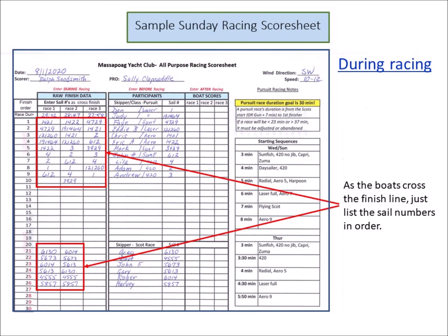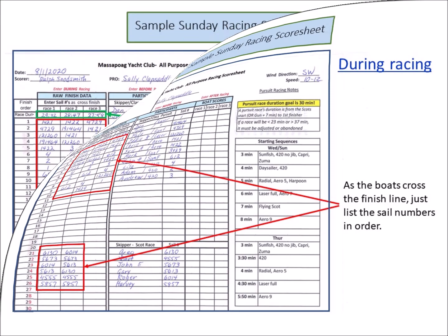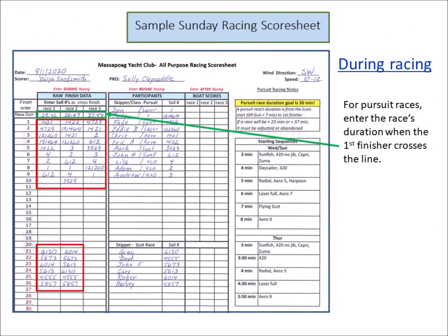What is required is simply a list of the sail number of each boat that crosses the finish line in order of its crossing. This list may even include boats that ultimately do not have a legitimate finish — for example, OCS boats or boats that cross the line twice. For a pursuit race, in addition to recording the sail numbers as they cross, the finish taker should enter the race's duration at the top of the column when the first finisher crosses the line.